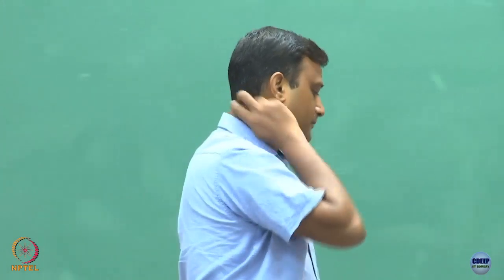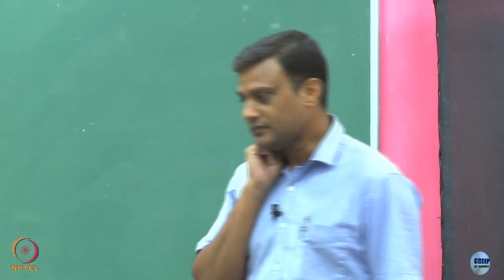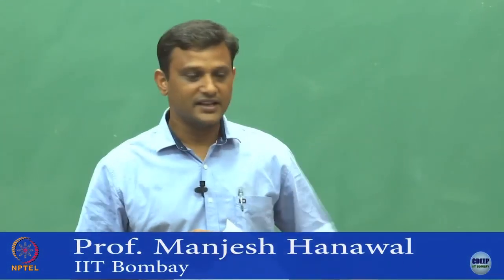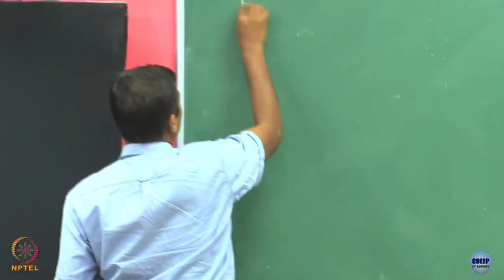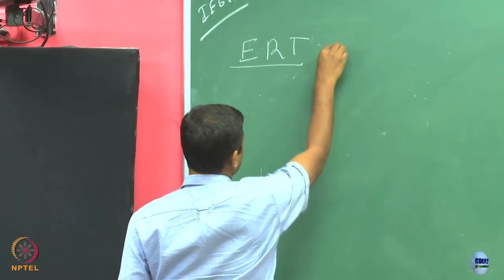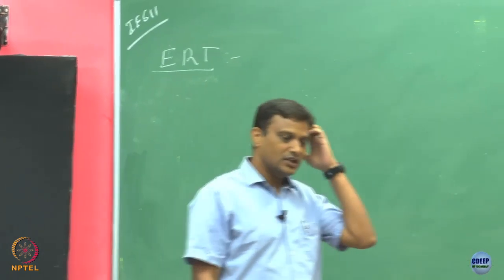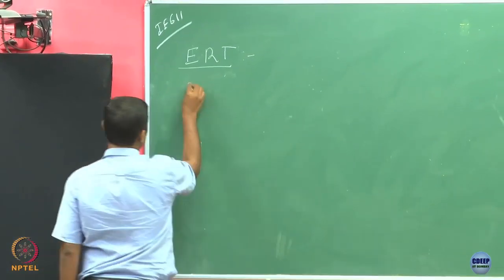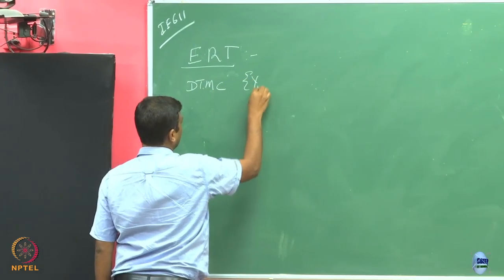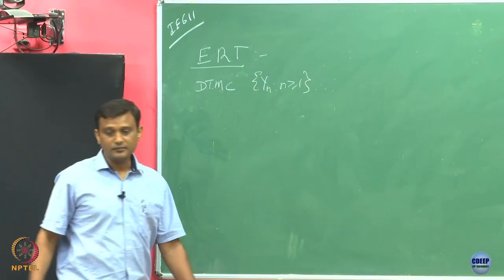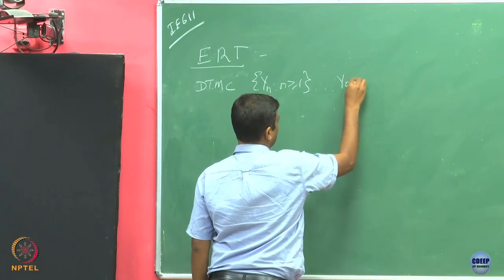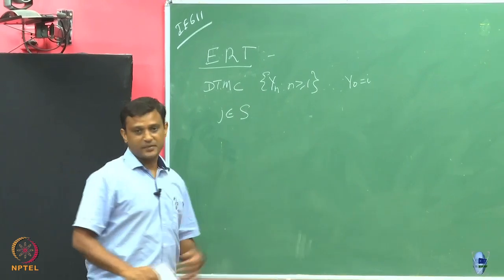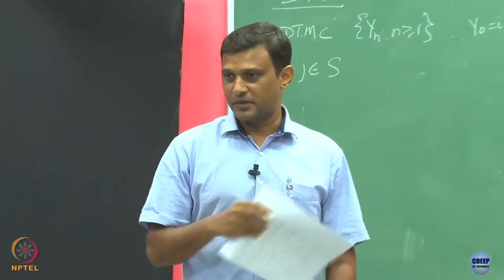Today let us wind up our discussion on Renewal Theory, whatever we started in the last class. In the last class we talked about this Elementary Renewal Theorem, what we called as ERT. As a recap, we started with the DTMC and said let us start with an initial state i, and I am interested in some particular state j where S is my state space, and I am interested in my DTMC going back to this particular state again and again.